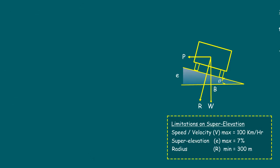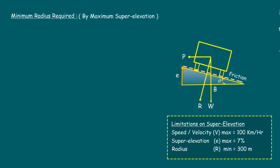Let us see how to calculate the minimum radius required. There are two methods: one is the method of maximum friction, and the second is by using maximum superelevation. Here, we will follow the second method — by maximum superelevation. In this method, the entire centrifugal force is balanced by the superelevation only, which is the equilibrium state — that means there will be zero friction on the surface of the pavement. Accordingly, as we already know, tan theta equals v²/gr. So the radius r equals v² divided by (g × tan theta).